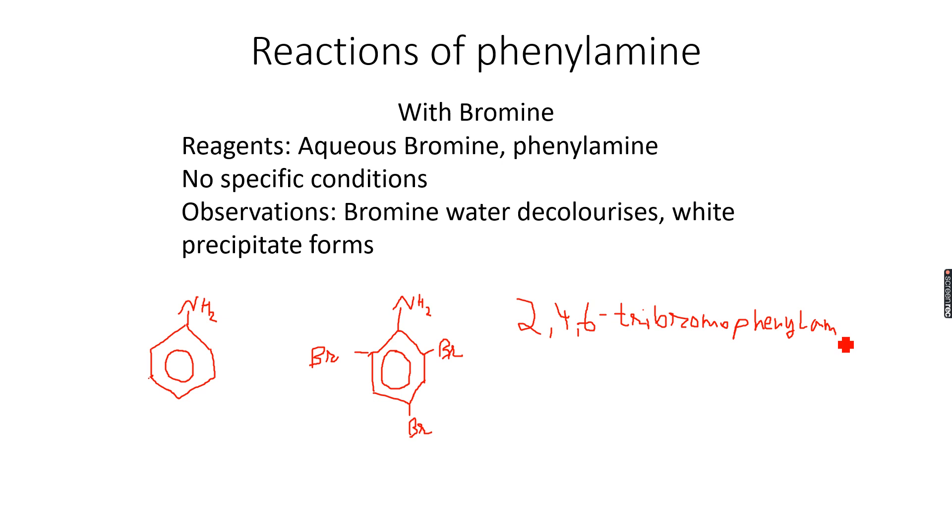This is very similar to what formed when we reacted bromine with phenol. This tells a lot about phenol and phenylamine - both are very reactive substances. If you go back to my video on benzene and its compounds, you will see that phenol undergoes a similar reaction with bromine directed to the two, four, six positions.